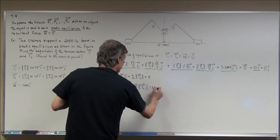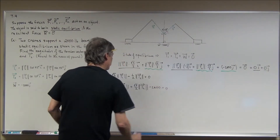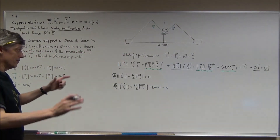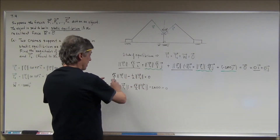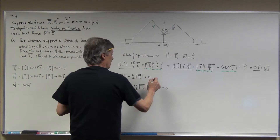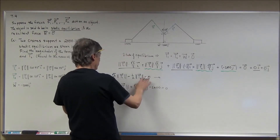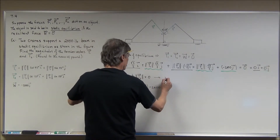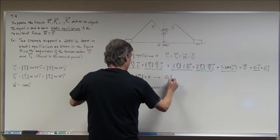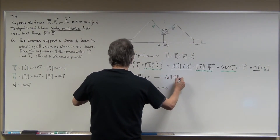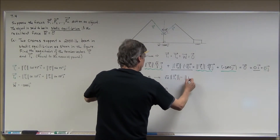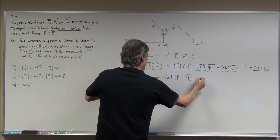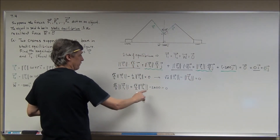Minus 2,000 is equal to zero. Here's where it gets a little different — I'm going to use my skills of solving a system. I'm not crazy about the fractions, so I'm going to multiply by 2, giving me the square root of 2 times the magnitude of T sub 1 minus the magnitude of T sub 2 equals zero. Down here I'm also going to multiply by 2.